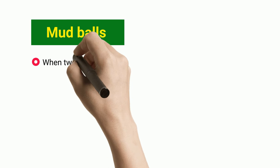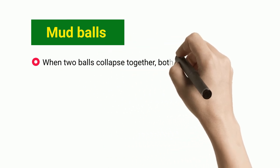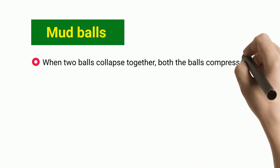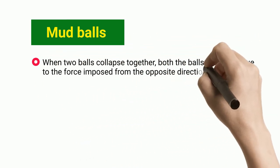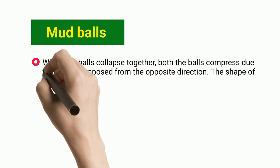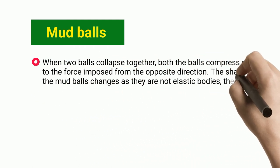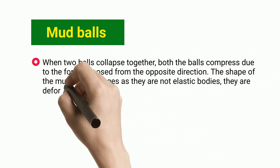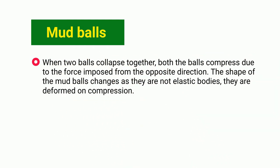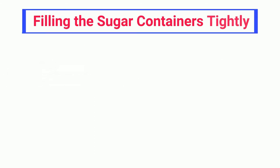Mud balls: when two mud balls collide, both balls compress due to the force imposed from opposite directions. The shape of the mud balls changes because they are not elastic bodies — they are deformed on compression.